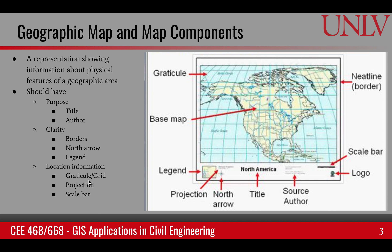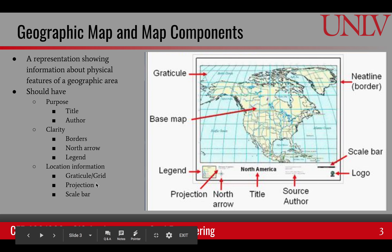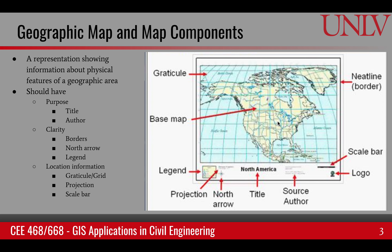The first optional element is graticule, which means providing latitude and longitude gridlines. If they are just regular gridlines, they are called a grid; if they are lat/long, they are called graticule. Then there is the map projection, indicating how the map was transferred onto a flat surface. And a scale bar, which tells us how distance on the map translates to distance on the ground. In lab two, you learn how to create a map and add these important components to a printout.